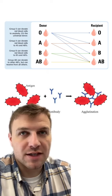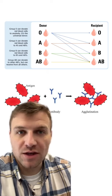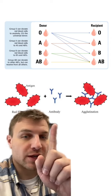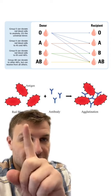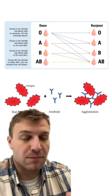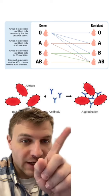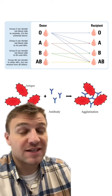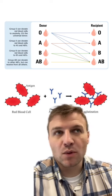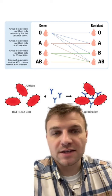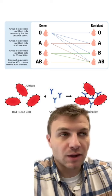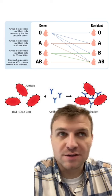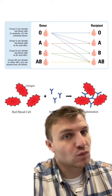What can happen if you receive blood from somebody with the wrong type is your antibodies will react with the antigens on their red blood cells, and your blood will coagulate, which can cause some major problems and even death. So it's really important that you receive and give blood to the right person so this coagulation and these major problems won't happen.